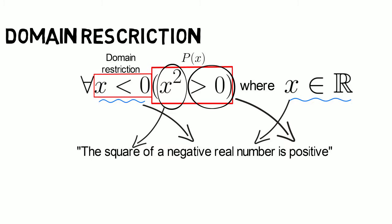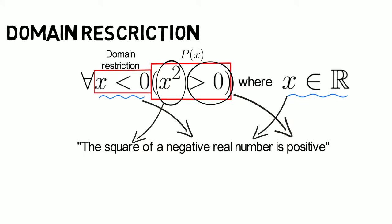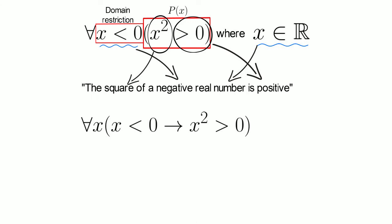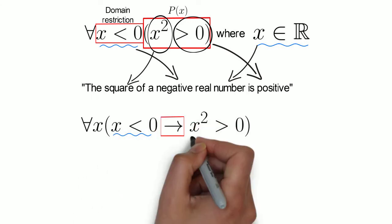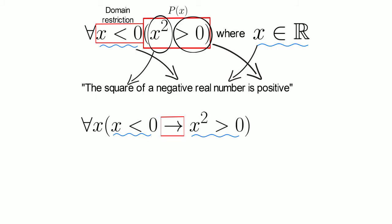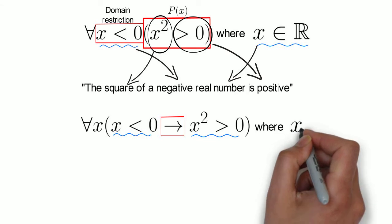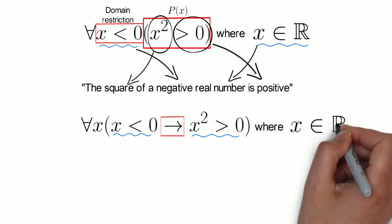This statement can also be written using the conditional statement inside the quantification, like this. For every x, x < 0 implies that x² > 0. Here, the domain must be specified by writing x ∈ ℝ.